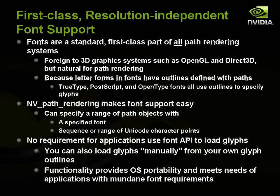NV path rendering makes it really easy to support fonts. You can specify a range of path objects for a specified font and a sequence or range of Unicode character points, and it will populate those path object names with path outlines corresponding to the glyphs of that font. There's no requirement for applications to use the font API — you can load the glyphs yourself. But one of the nice things about using the interface is it provides operating system portability, so you can use the same API on Windows, Linux, or Solaris to access fonts the same basic way.